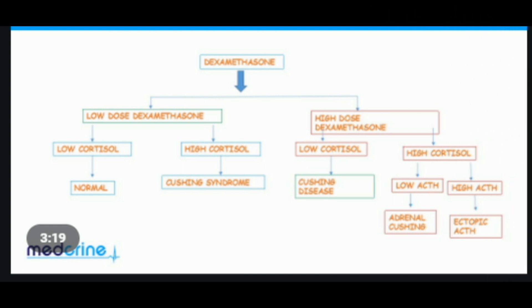The low-dose dexamethasone suppression test measures the response of the adrenal glands to ACTH and has been widely utilized for four decades. It involves taking a small dose of dexamethasone (1 mg) at 11 PM, then having blood drawn to screen for cortisol the following morning. In patients without Cushing's syndrome, the morning cortisol level is typically very low, whereas in patients with Cushing's syndrome, it will be high. Normal patients suppress cortisol to below 1.8 mcg/dL; those with Cushing's syndrome will not.